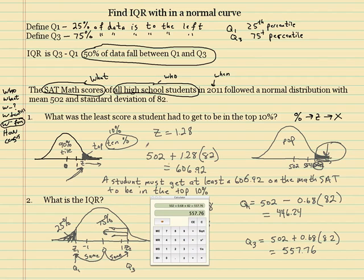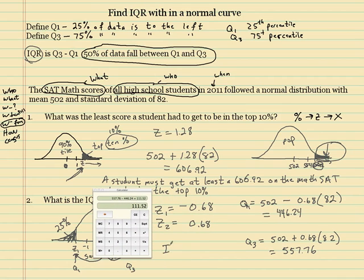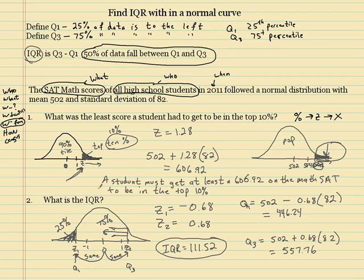Am I done? No, I'm not done, because the IQR is Q3 minus Q1. So this is my Q3. I go ahead and subtract off 446.24. So my IQR equals 111.52. So that's how you find the IQR using the table.